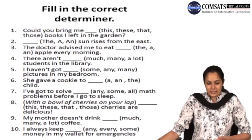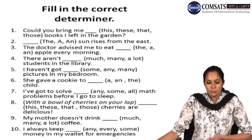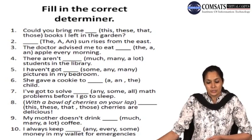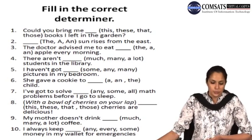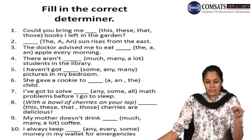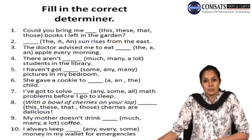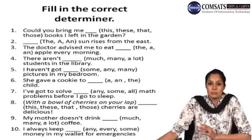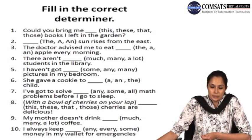Now we move on to a basic exercise of some determiners — a mixed exercise. Sentence number 1: 'Could you bring me dash?' Out of four options, choose the demonstrative determiner. The answer is 'those': 'Could you bring me those books I left in the garden?' These determiners are words that come with nouns to determine their meaning — that is why we call them determiners. They include quantifiers, numbers, difference words, demonstratives, distributives, or articles — both definite and indefinite.